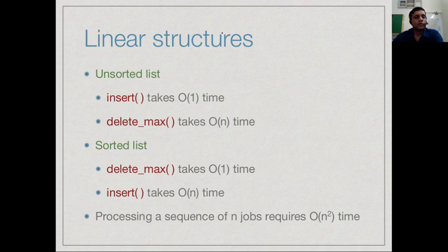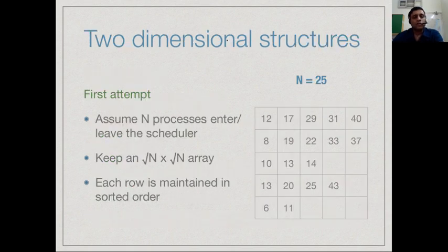This suggests to us that a linear structure, a one-dimensional structure has a severe limitation with respect to solving the representation of a priority queue in an efficient way. We have to go from a one-dimensional structure to a two-dimensional structure. Let us start with a very naive two-dimensional structure just to show how we can get drastic improvements just by moving from one-dimension to two-dimensions.